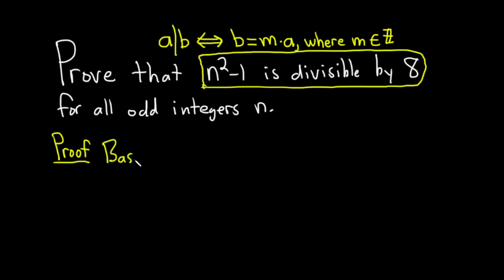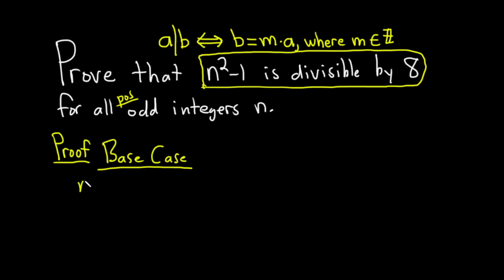Let's go through the proof. We'll do the base case first. In the base case, we have to show that our statement is true for the smallest odd integer. This should say all positive odd integers, so the smallest positive odd integer is 1. So when n equals 1, what happens?